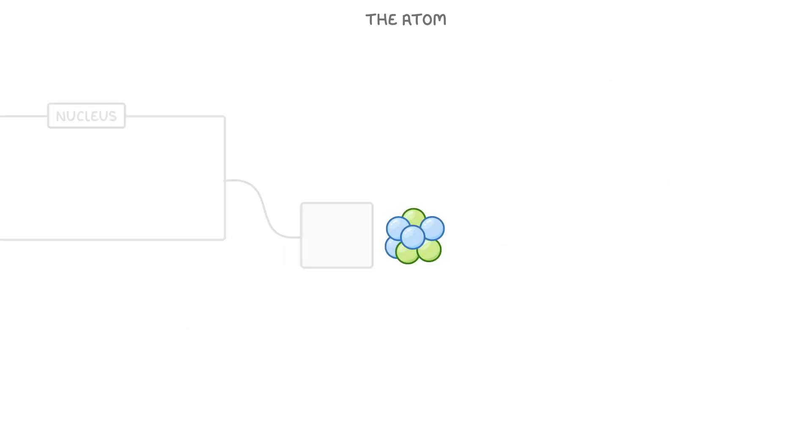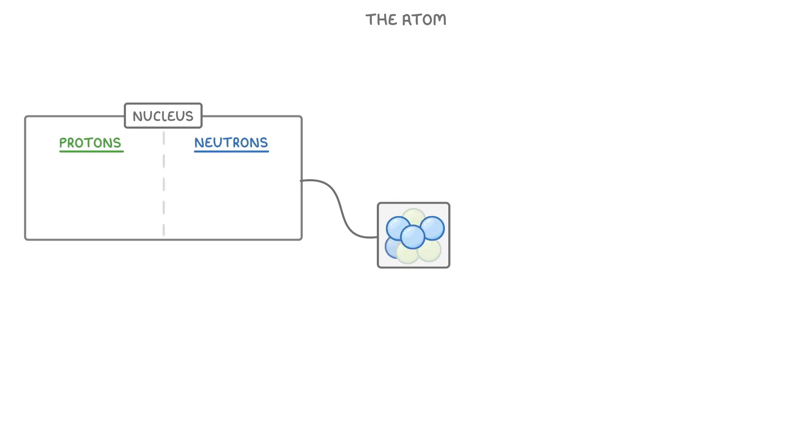In the centre of every atom is a nucleus, which contains individual protons and neutrons. The protons are positively charged, so 1+, while the neutrons are neutral, and we say that both of them have a relative mass of 1.